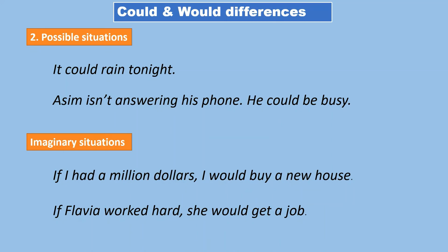The second difference is possible situations versus imaginary situations. For possible situations, we use 'could.' For example: 'It could rain tonight' — looking at the clouds, I see a possibility of rain. Another example: 'He's not answering his phone — he could be busy.' But for imaginary situations, we use 'would.' For example: 'If I had a million dollars, I would buy a new house' — this is imaginary, because I don't actually have that money.